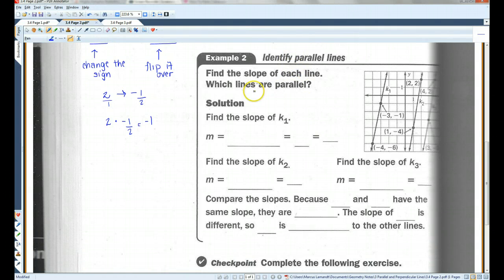Find the slope of each line. Which lines are parallel? Find the slope of K1. Sorry, this got cut off. K1 is here. M, the slope, let's use this point and this point. So, the Y values are negative one and negative six. And, the X values are negative three and negative four. Now, remember, whenever you have a minus negative, it becomes a positive. Negative one plus six is five. Negative three plus four is one. So, the slope is five.